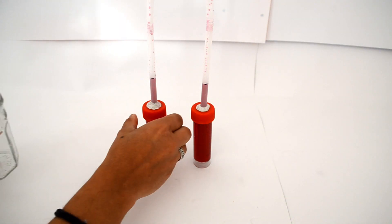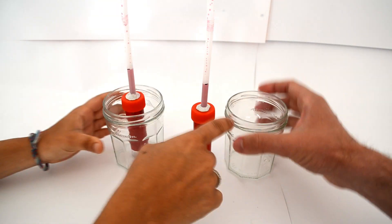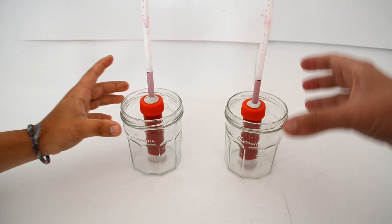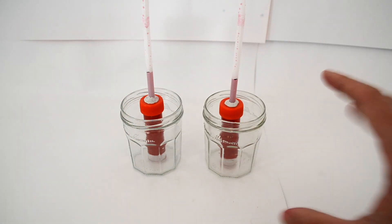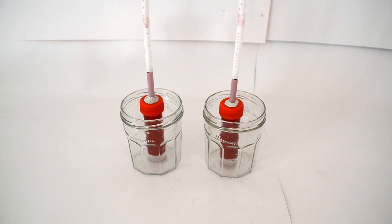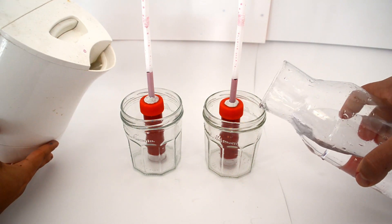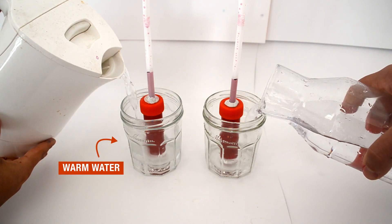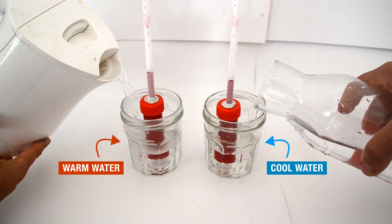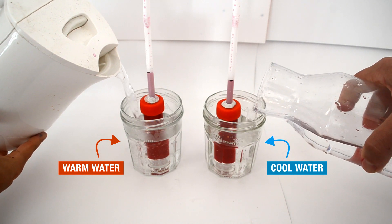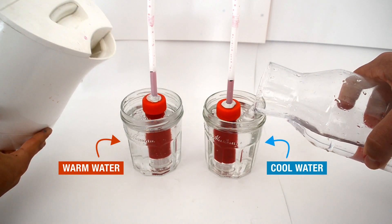We can now change the parameter that we are interested in: the temperature, in other words, the oceanic temperature. One of the bottles is placed near a heat source. It represents the oceans under global warming. The other bottle will be left at room temperature. It is the control for our experiment.